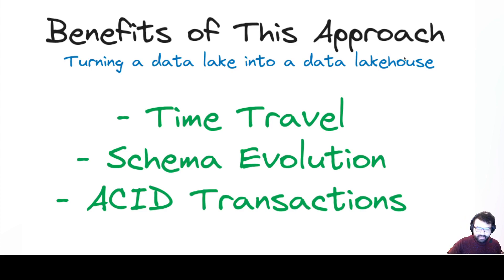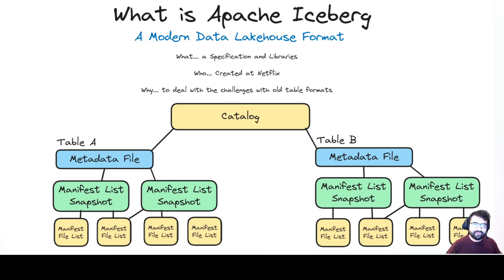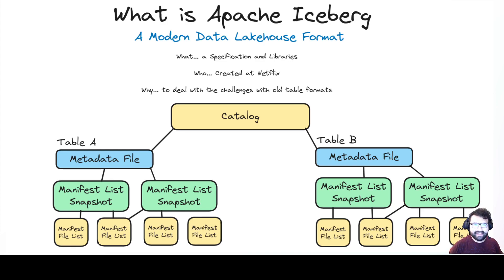One very big table format taking the world by storm is Apache Iceberg. What it is: it's a specification and libraries. Apache Iceberg focuses on one specific thing — a specification, which is a standard set of rules for how metadata is written and how it should be read. Any tool can adopt that specification. It's basically creating a universal language to talk to data on the data lake. In aiming to be a universal language, it aims to be neutral amid the competition between tooling trying to dominate the data lake or data lakehouse space.